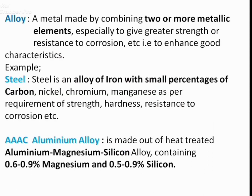An alloy is a metal made by combining two or more other metals, especially to give greater strength or resistance to corrosion — to overall enhance good characteristics. Steel is an example of an alloy, which is an alloy of iron and carbon; nickel and chromium may be added to enhance other properties. The alloy in AAAC conductor is an alloy of aluminium, magnesium, and silicon.